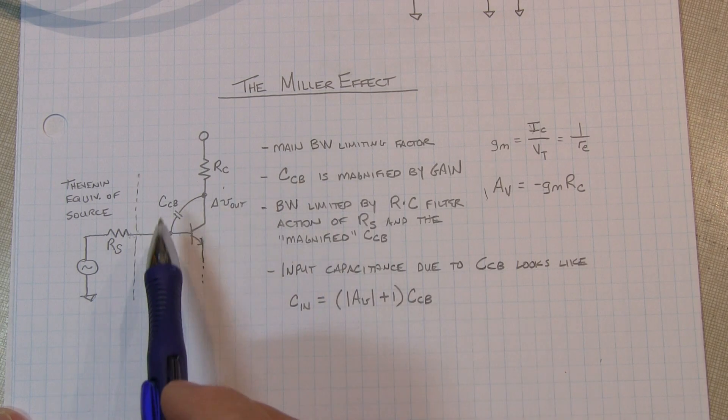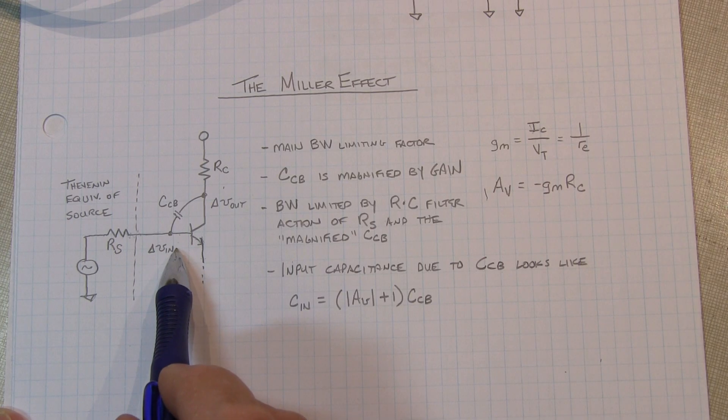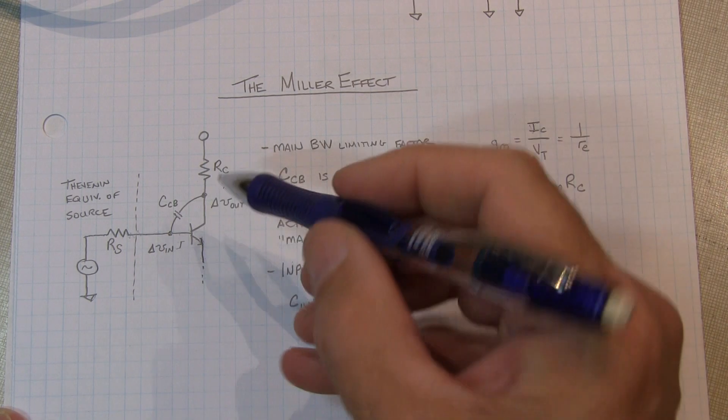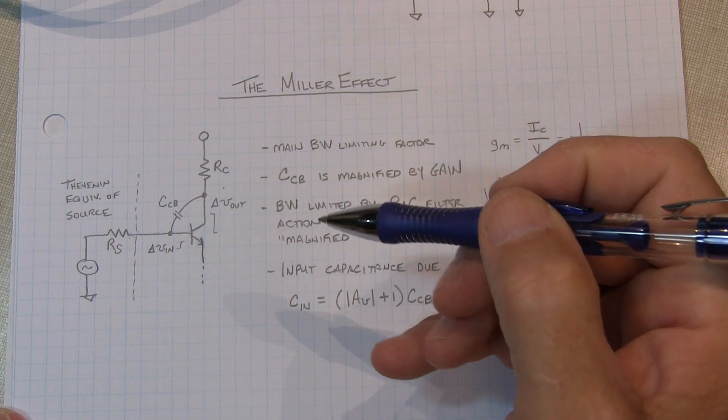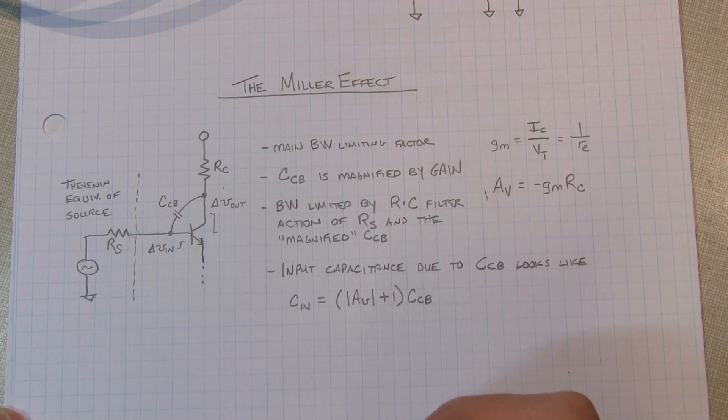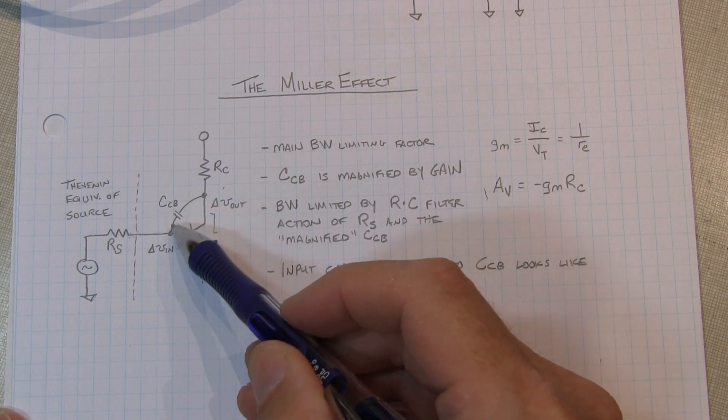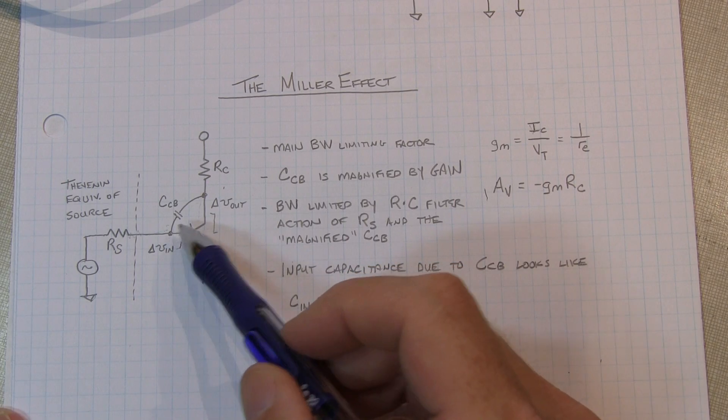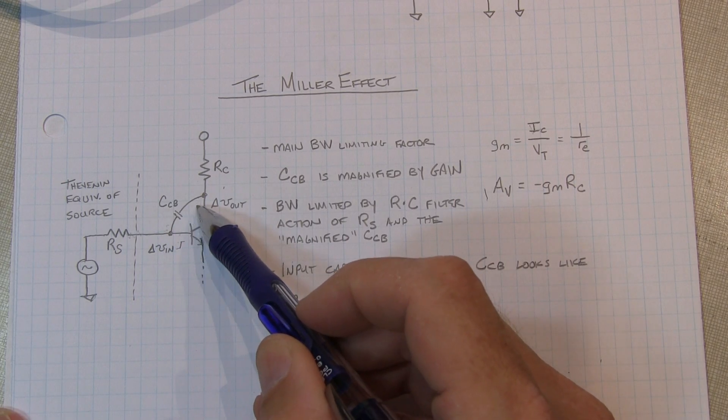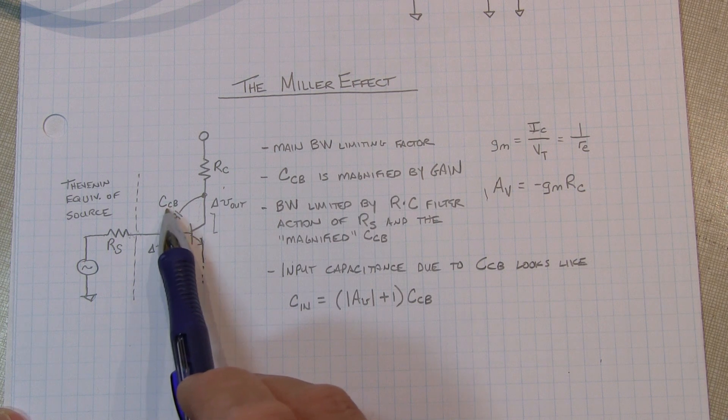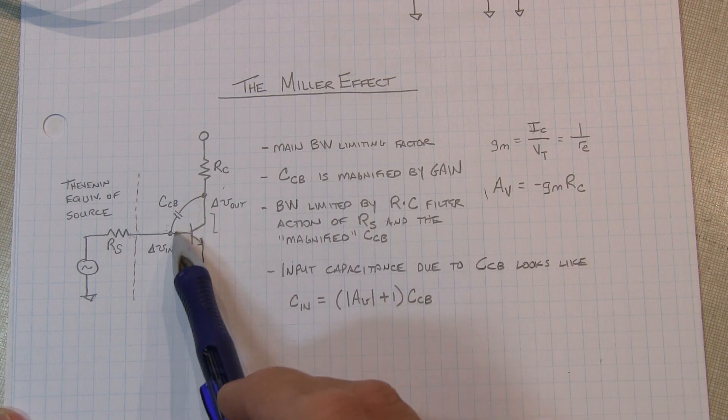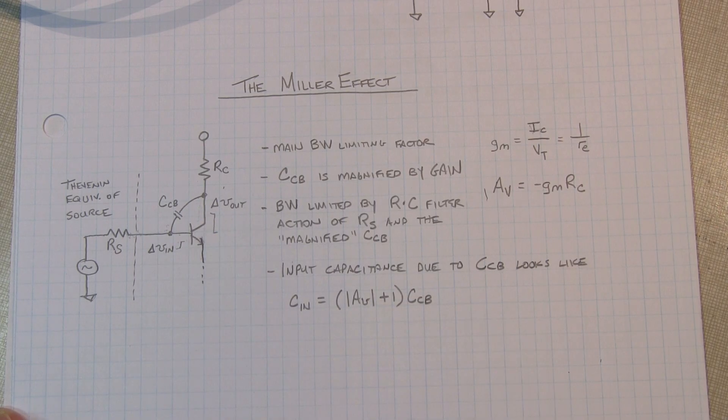But look at what happens here. Let's say we have a small voltage change at the input. Maybe a small voltage that's going up. That small voltage going up is going to result in a large voltage moving down on the collector because of the inverting gain. So if we look at the voltages on either side of this capacitor, we've got this side moving up by a little bit, this side moving down by a lot. So in effect, the current flowing through here is as if this capacitor is about the gain of the transistor times larger than the value of the capacitor itself.